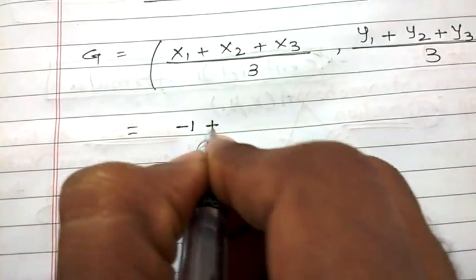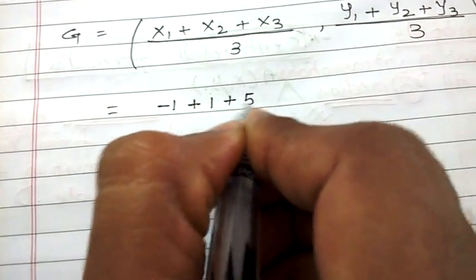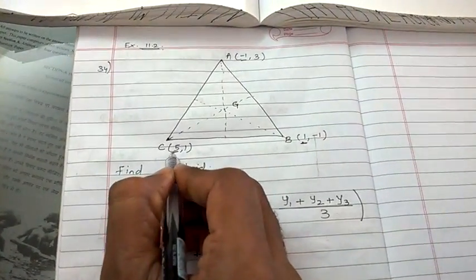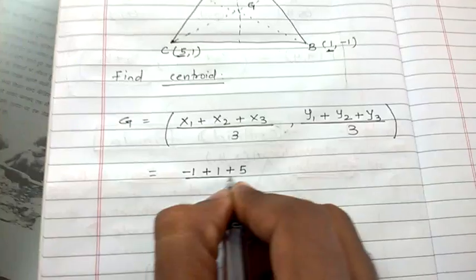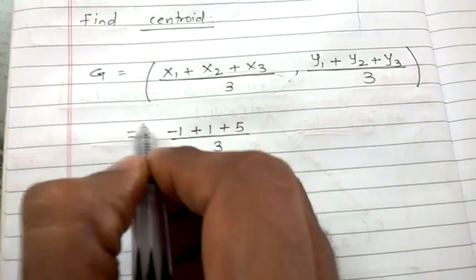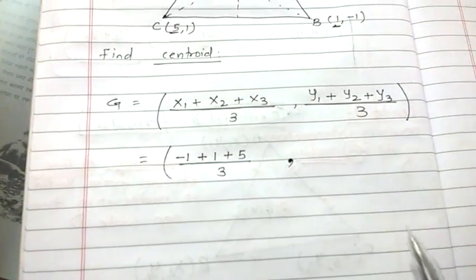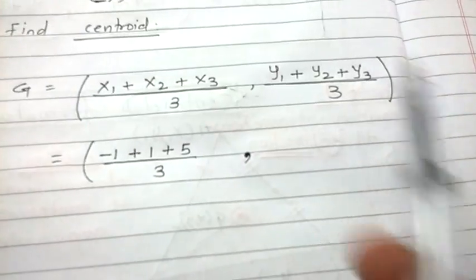minus 1 plus 1 plus 5, this is x1, this is x2, and this is x3, upon 3 comma. Where is y1 plus y2 plus y3?